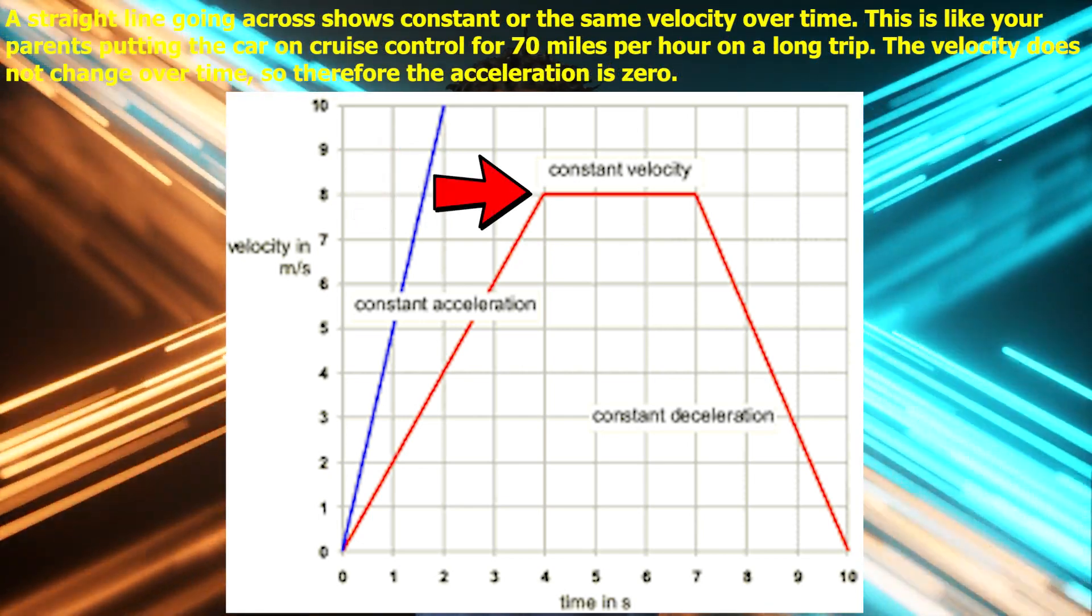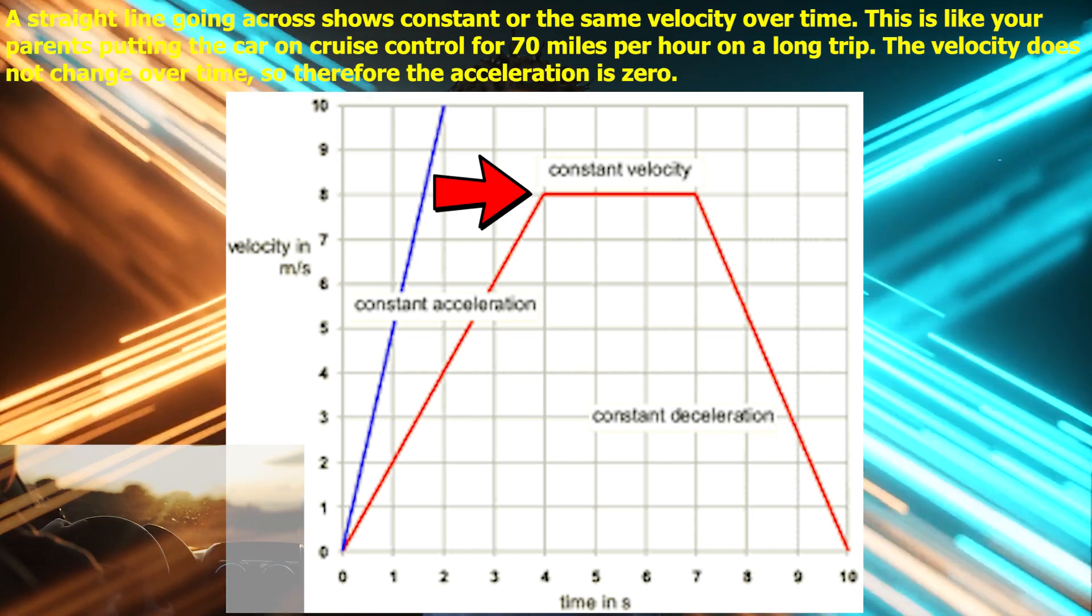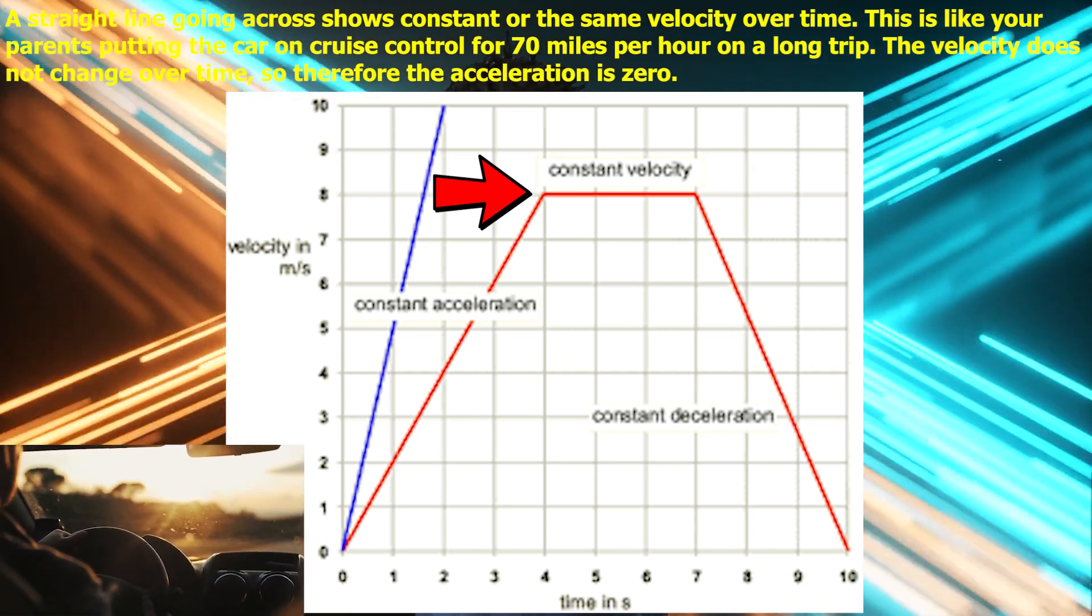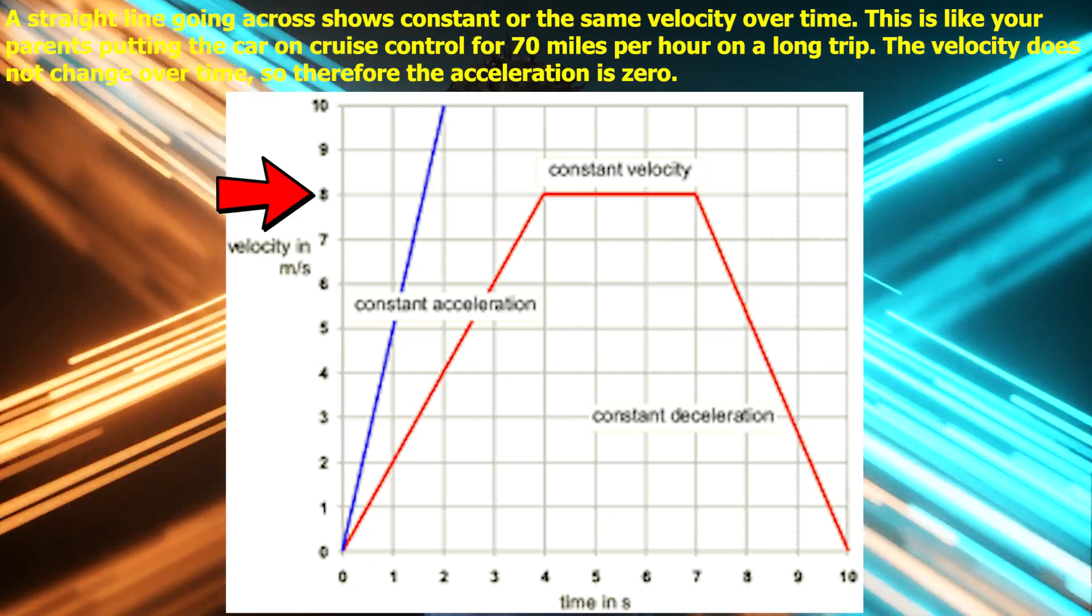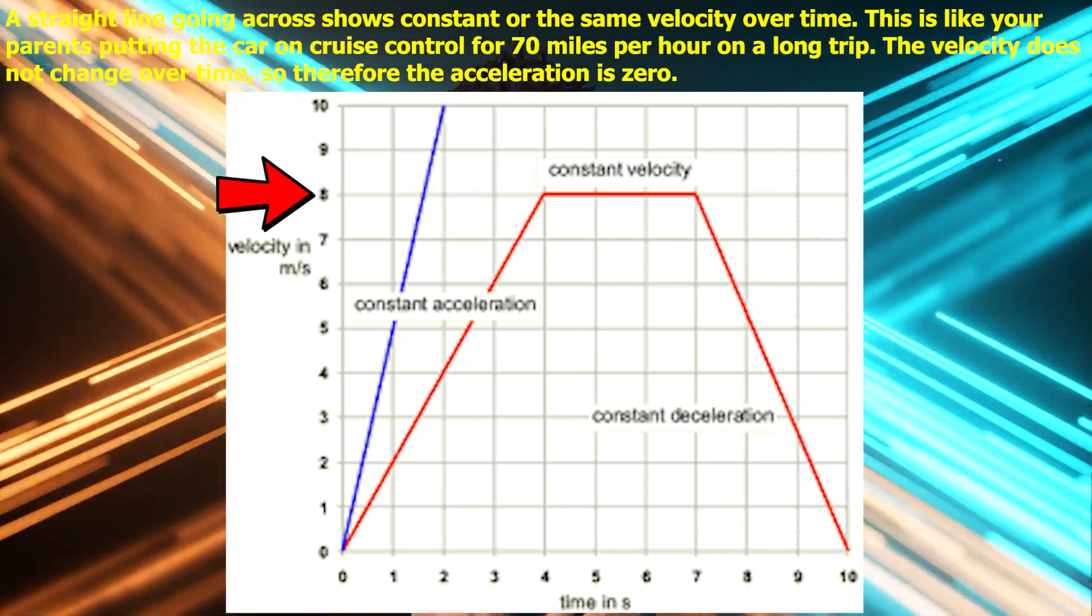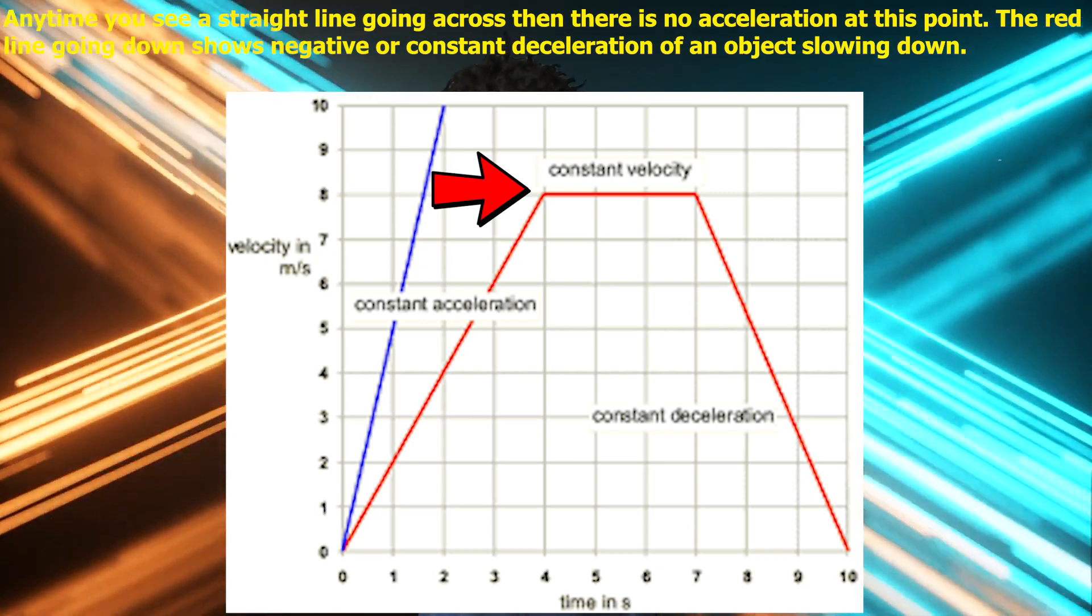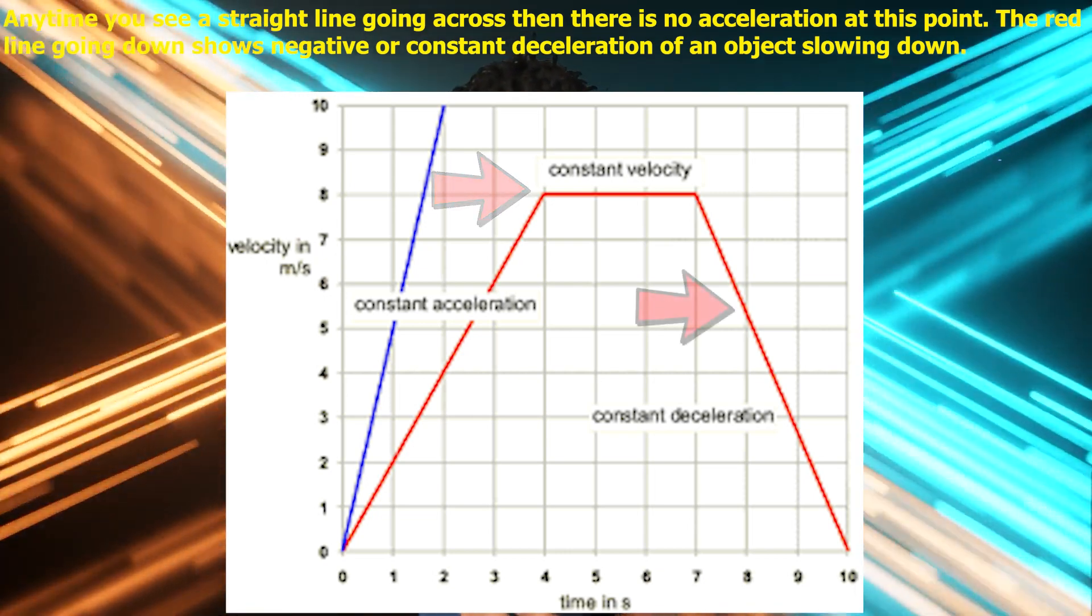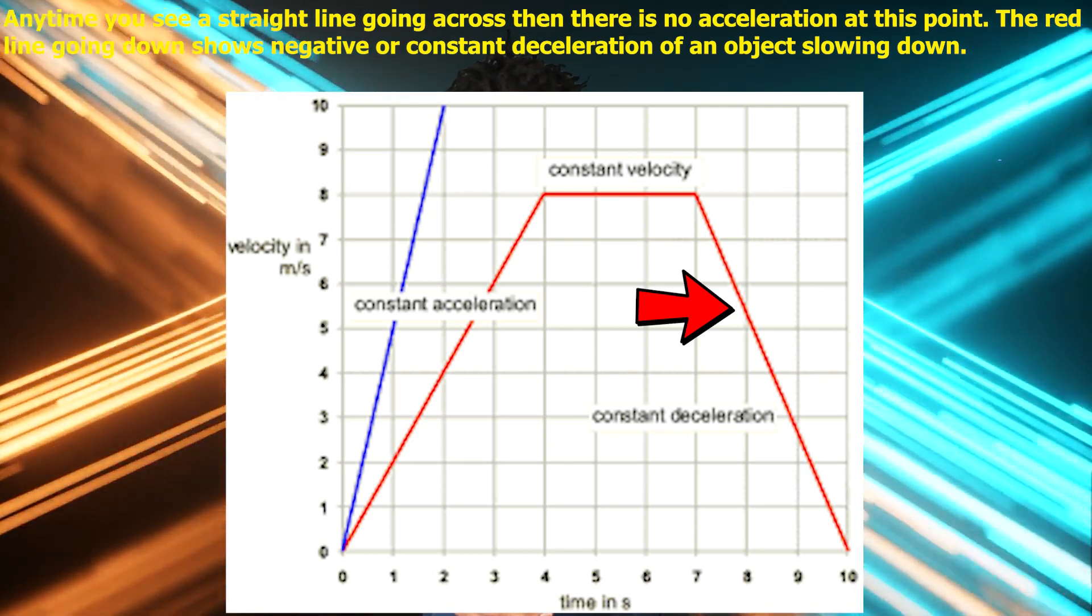A straight line going across shows constant or same velocity over time. This is like your parents putting the car on cruise control for 70 miles per hour on a long trip. The velocity does not change over time, so therefore the acceleration is zero. Anytime you see a straight line going across, then there is no acceleration at this point. The red line going down shows negative or constant deceleration of an object slowing down.